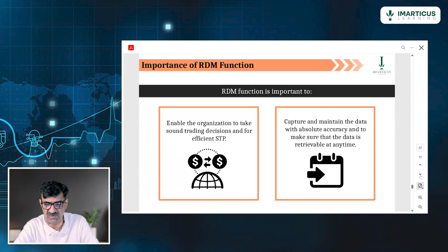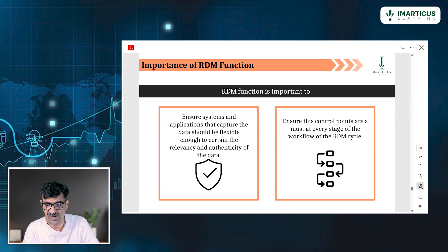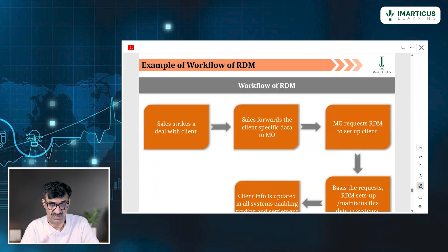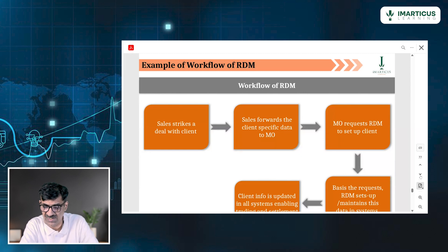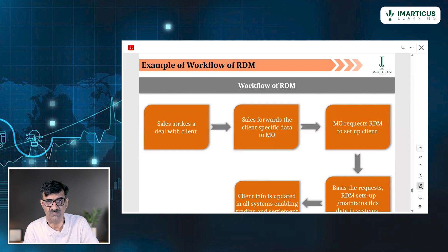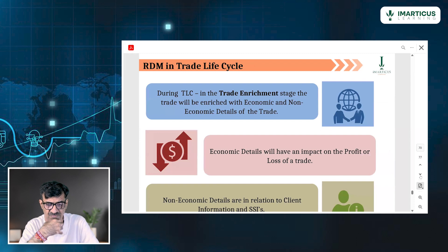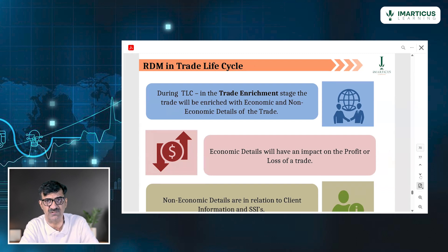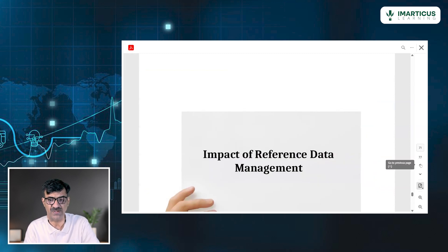RDM helps in coordination and risk management, and ensures the system and control of the entire cycle is in place. In a typical flow, a sale deal is struck with a client, the client-specific data goes to the middle office, the middle office sends it to RDM, RDM checks everything, and the client is informed. In the trade enrichment stage of the trade life cycle, all details are provided — economic details involve profit or loss, and non-economic details are for client information.